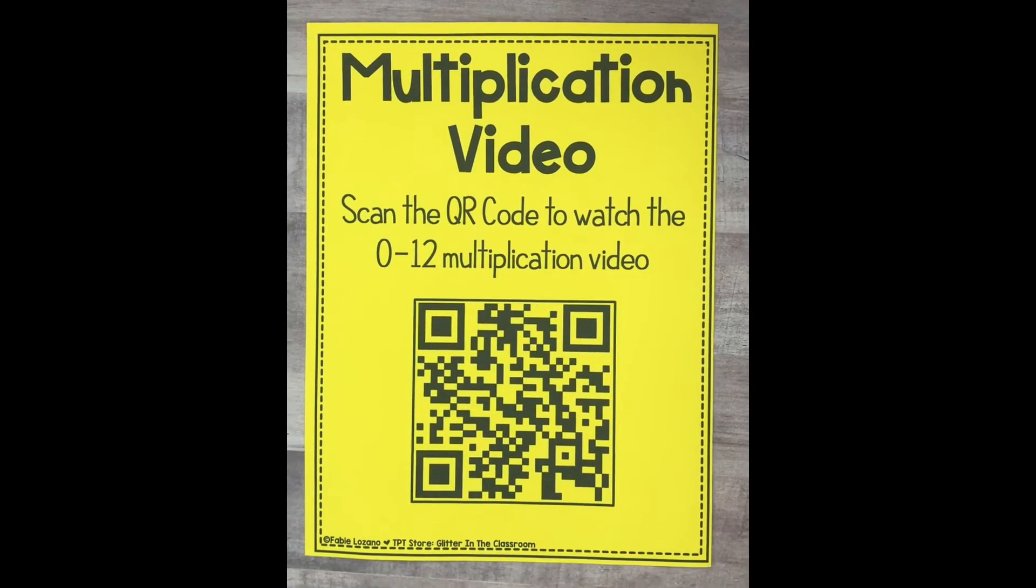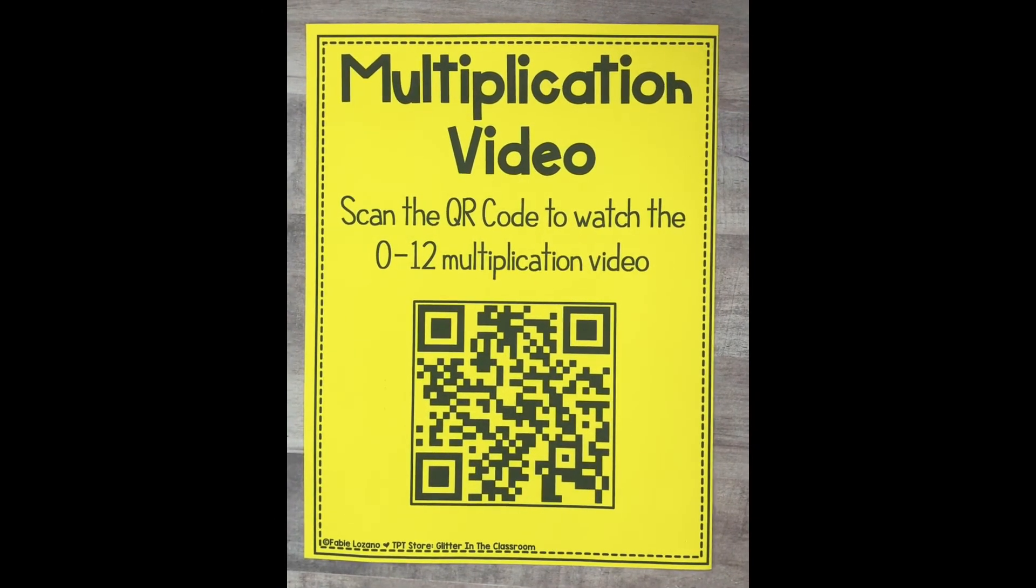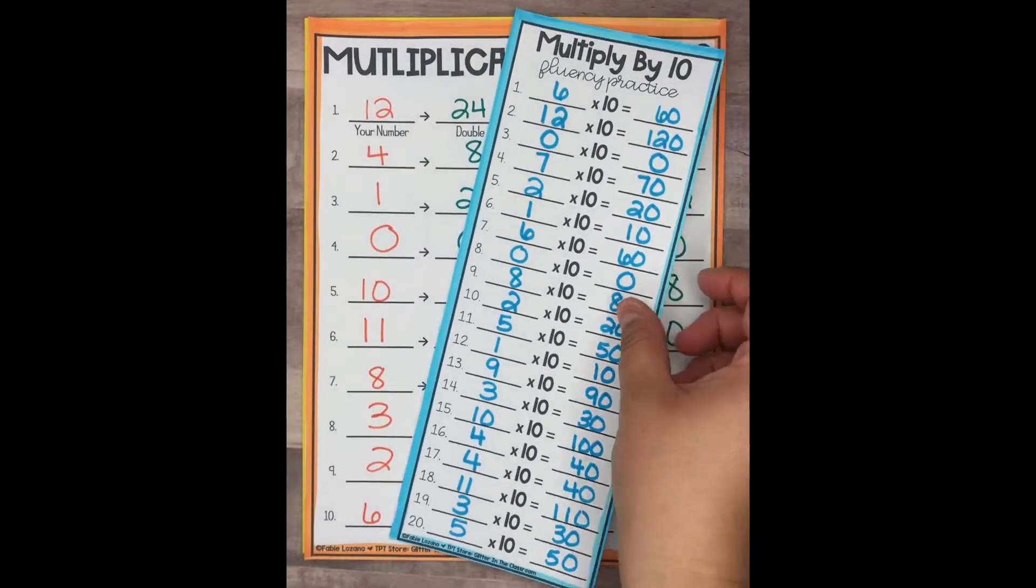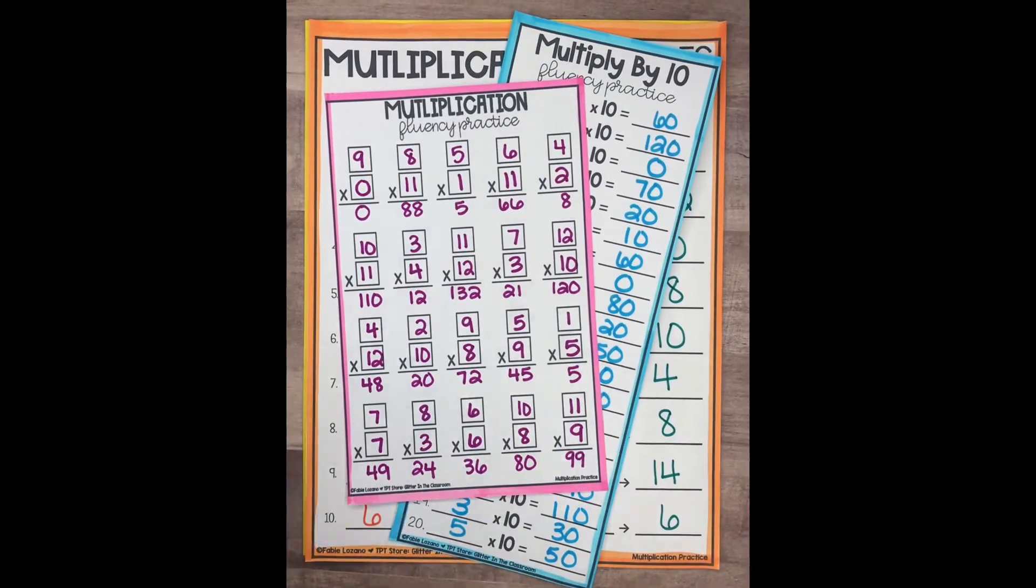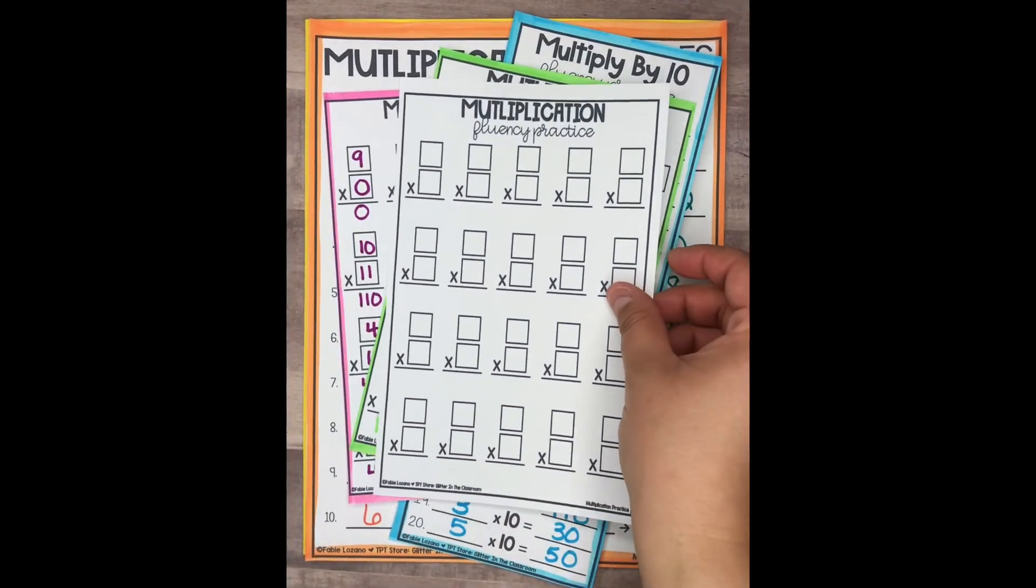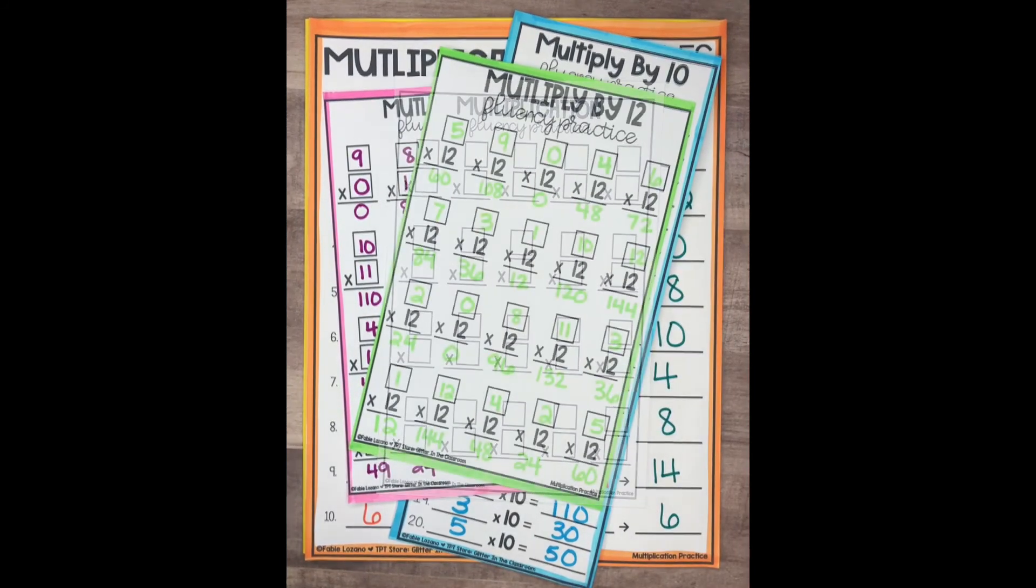This resource includes the QR code that links you to the multiplication video, different multiplication pages for numbers 2-12, and blank multiplication pages so that you can assign them as you see fit.